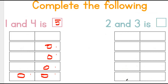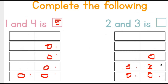Two and three. One, two. One, two, three. Let's count them together: one, two, three, four, five. We have five circles altogether.